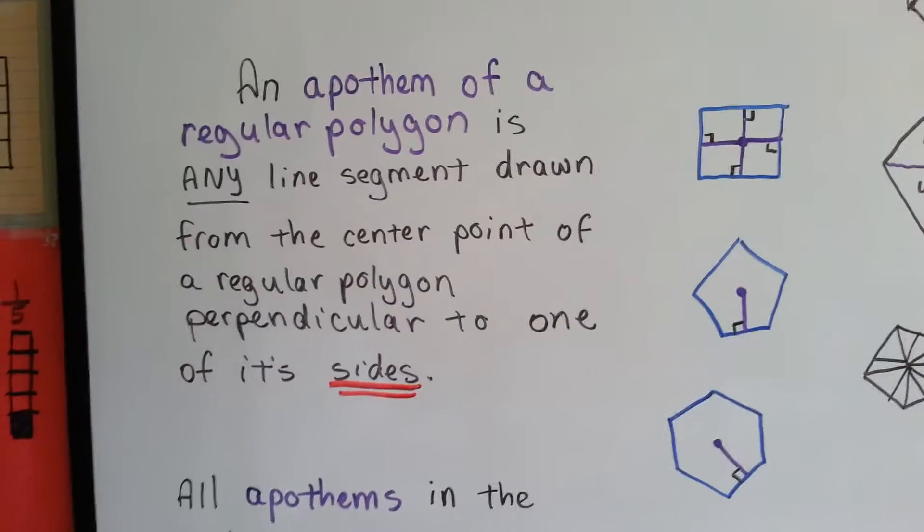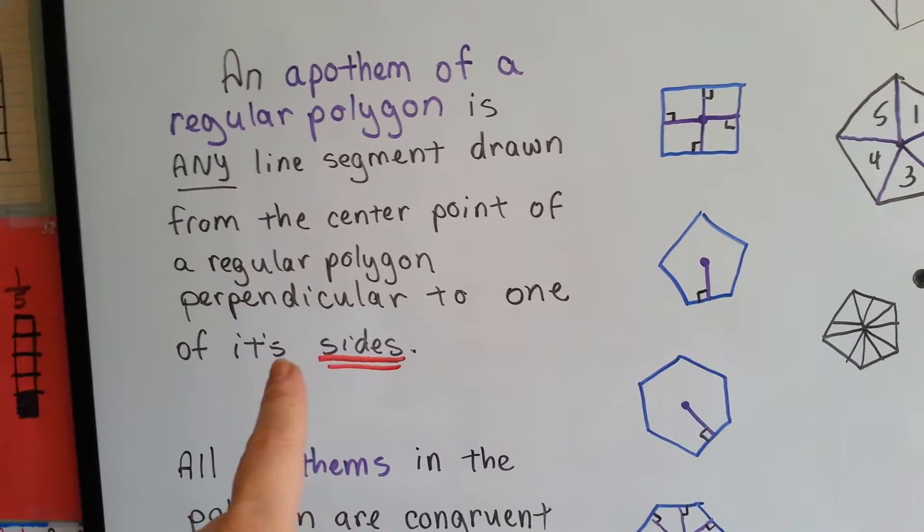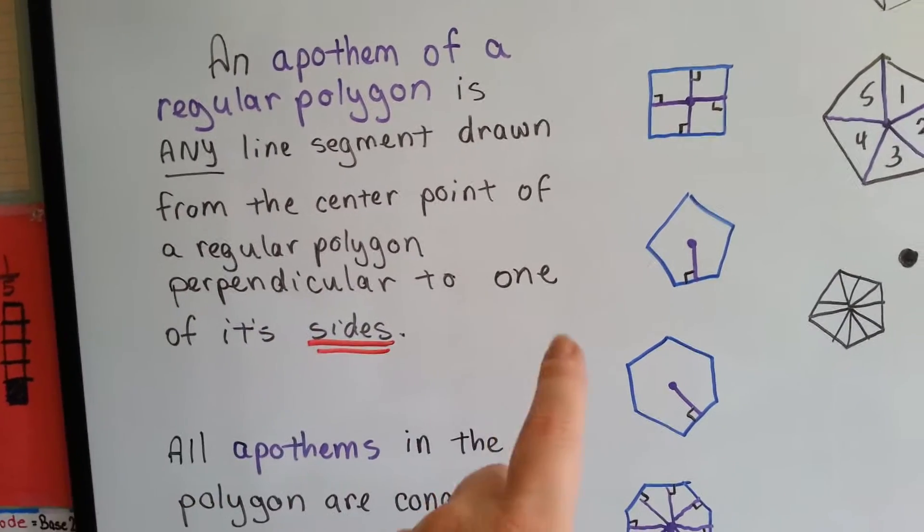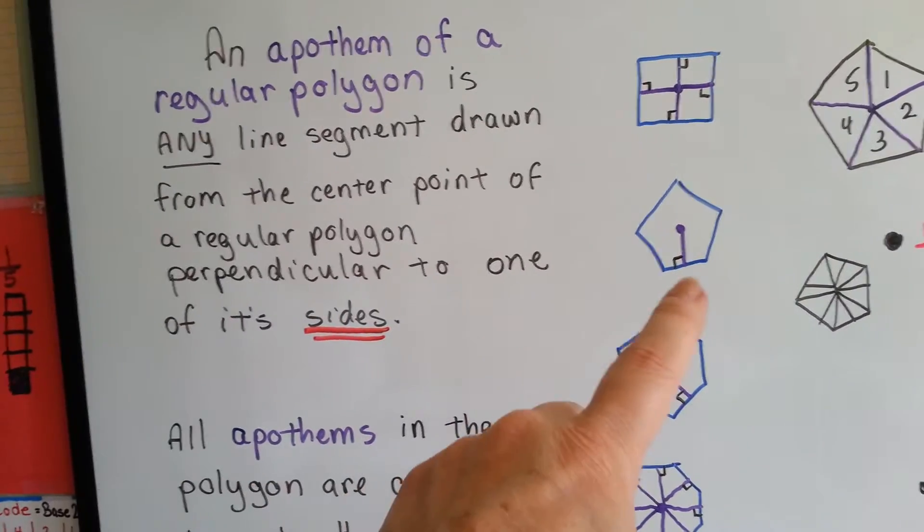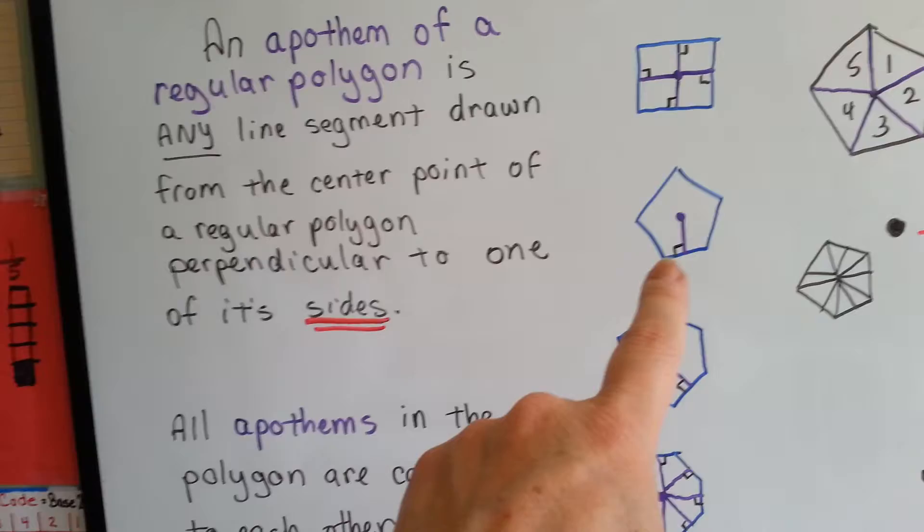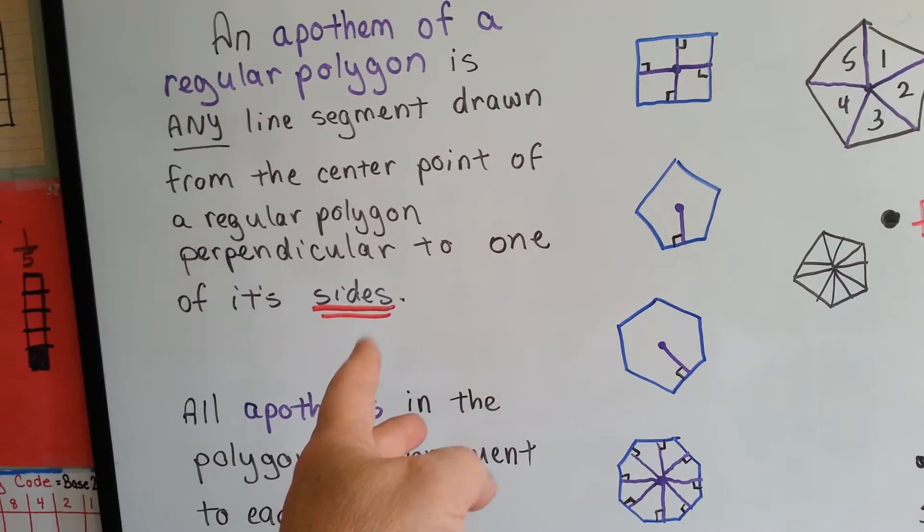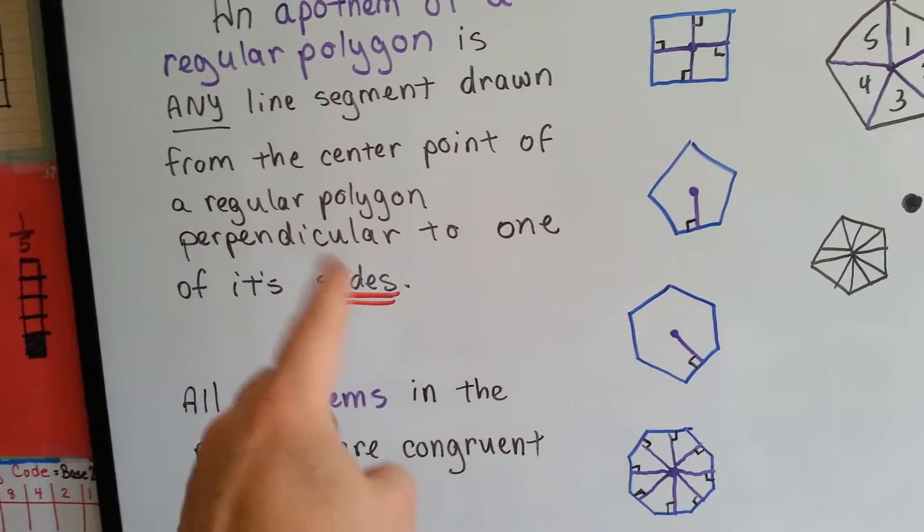For those who don't know, an apothem of a regular polygon is any line segment drawn from the center point of a regular polygon perpendicular to one of its sides. Not a vertex, to a side. If it was drawn to a vertex, it wouldn't be able to be perpendicular, would it? It would be like 45 degrees instead of 90, so remember that it's a side.